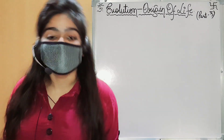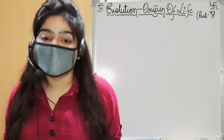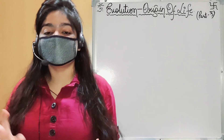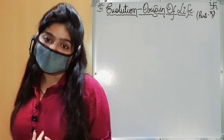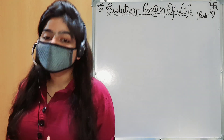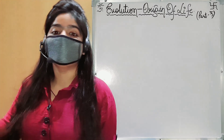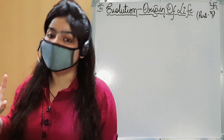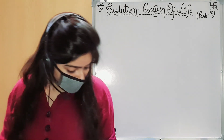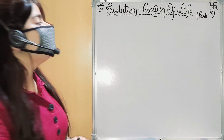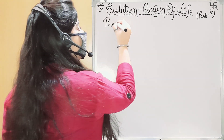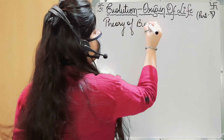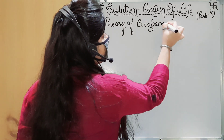Hello friends, welcome to my channel Science Tutorials. In today's video I will begin with a new topic: the theory of biogenesis. In this video we cover the introduction part of this chapter, plus two theories — the theory of special creation and the theory of spontaneous generation, which is called autogenesis and abiogenesis.